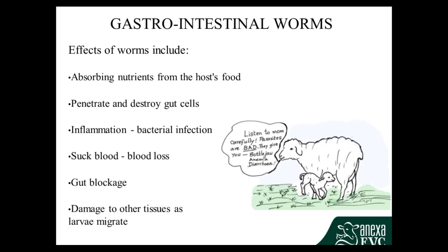The damaged tissues point is predominantly the liver. You get quite a bit of scarring through the liver due to migration of the worms, which can cause issues further down the track. Again, this is quite a rare effect that we don't tend to come across very often.